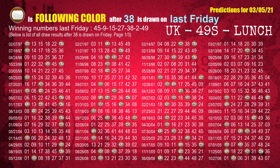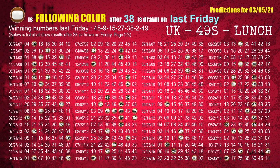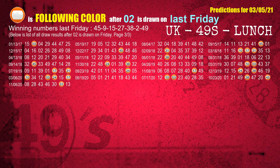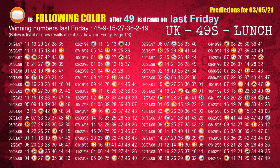The fifth winning number last Friday is 38. The most frequently following color is brown when 38 is the winning number on last Friday. The sixth winning number last Friday is 42. The most frequently following color is orange when 42 is the winning number on last Friday. The booster winning number last Friday is 49. The most frequently following color is orange when 49 is the winning number on last Friday.